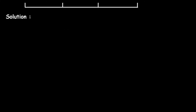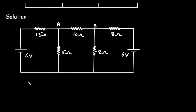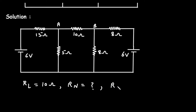In this circuit, this 10 ohm will be our load resistor, so we can write RL is equal to 10 ohm. For Norton's equivalent circuit, we need the value of Rn and also the value of In — Norton's resistance and Norton's current. Now let's find the value of Rn and In.